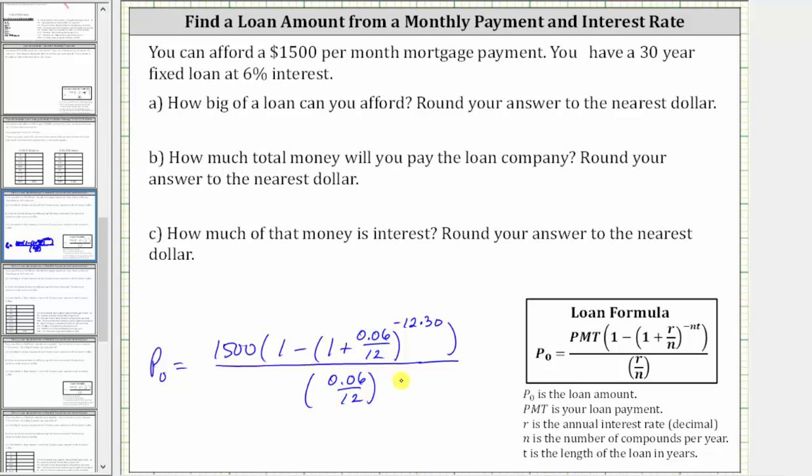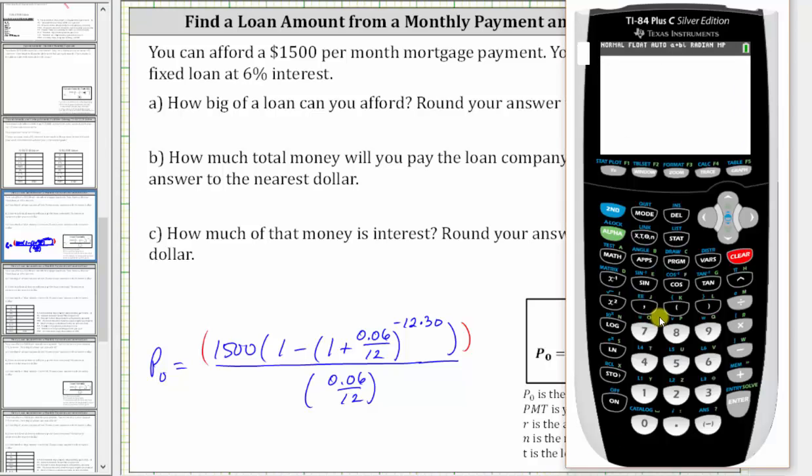Now let's evaluate this on the calculator. When we enter a complicated fraction on the calculator, it is important to have parentheses around the numerator and denominator so that it's interpreted correctly. So when entering this quotient, we'll add another set of parentheses. Going to the calculator, we have open parentheses 1,500, open parentheses 1 minus open parentheses 1 plus 0.06 divided by 12,